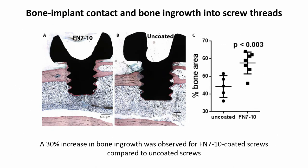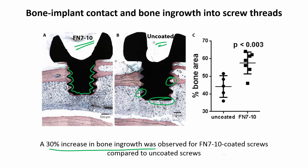Finally, they sacrificed the animals, took the bone out, stained it, and did histology. In the histological images you can see that the fibronectin-coated screw has nearly all parts covered in bone — shown by the pink staining — whereas on the uncoated screw there are areas where no bone is present. This confirms that bone does prefer the coated screws and forms preferentially on those surfaces. Measuring the contact area shows a 30 percent increase in bone ingrowth compared to uncoated screws in fibronectin 7-10 coated screws. We will stop here and continue further in the next class.